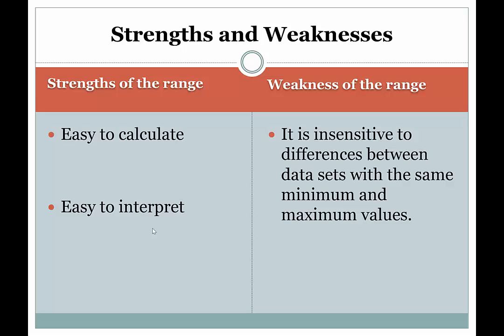That is not as dispersed as a class where they have the highest grade being 100 and the lowest grade being 20. That has a range of 80 and the scores are more spread out there, it would seem. So it's easy to interpret, easy to calculate. What are the weaknesses of the range?